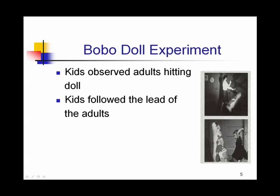In one of his now famous experiments, Bandura had kids observing an adult hitting a doll. This was called the Bobo doll experiment. The kids were then placed in a room with the doll as well as other toys, and he filmed what the kids did. Basically they did exactly what the adult had done — 88% of the kids imitated the behavior of the adults, and within eight months, 40% of those students still continued to do the same thing.